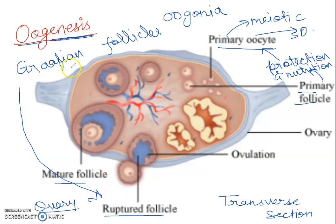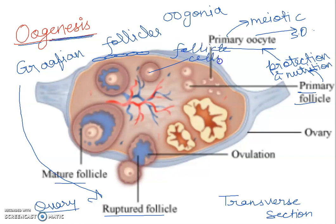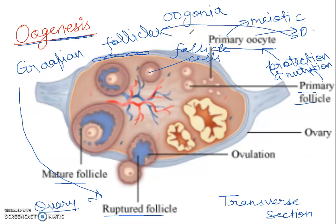Here is the germinal epithelium layer. These are the structures of follicle cells. You can see the germinal epithelium layer, the follicles, and the secondary follicles containing the primary oocyte.